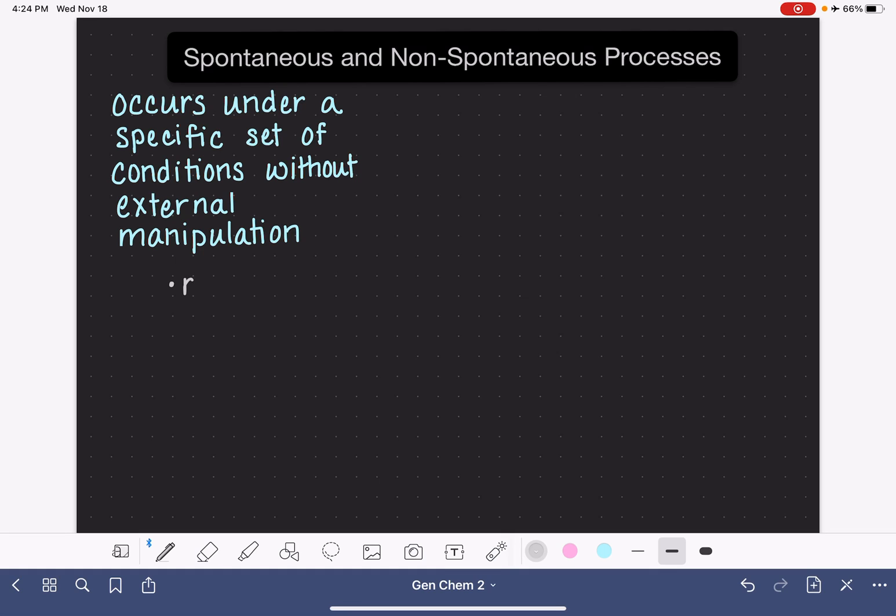Some examples of spontaneous processes are rusting. If you leave a piece of iron outside for a while, the environment is naturally just going to cause the rusting process to occur.